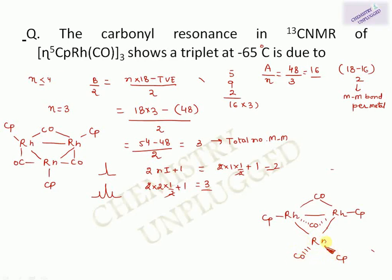For an alternative arrangement with two bridging COs and one terminal CO: each bridging CO interacts with two Rh atoms, giving 2 × 2 × (1/2) + 1 = 3, so a triplet for those peaks. The terminal CO interacts with only one Rh, giving 2 × 1 × (1/2) + 1 = 2, a doublet. This arrangement gives two types of peaks: a triplet and a doublet.